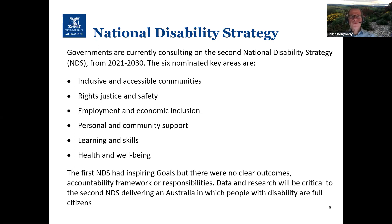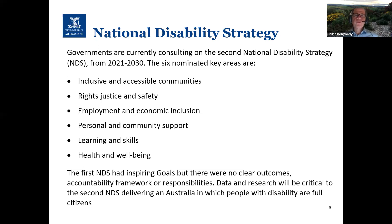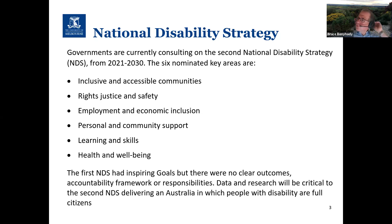The fifth element is learning and skills — making sure that people with disability have access to education and training, which is such a life changer for all of us. The final element is health and well-being, making sure that people with disabilities have access to good quality health services and that their well-being is supported equally. The second national disability strategy follows the first, which ran from 2010 to 2020. That was a good strategy with great goals, but there was no clear accountability for delivery of outcomes, and we're hoping that will change.